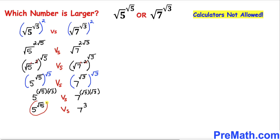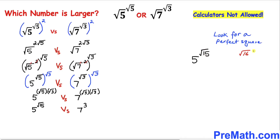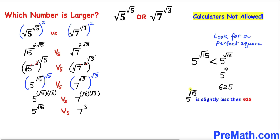Now let's focus on the left hand side number: 5 raised to the power square root of 15. We are going to look for a perfect square that is very close to 15 — the closest perfect square is 16, so square root of 16 is 4. Therefore 5 raised to the power square root of 15 is slightly less than 5 raised to the power 4, and 5 to the power 4 is 625. So this left hand side number is slightly less than 625.